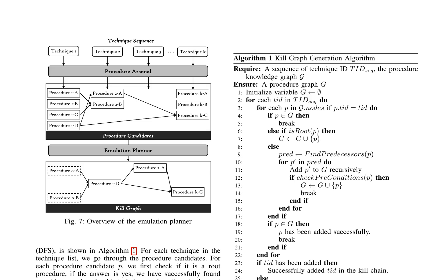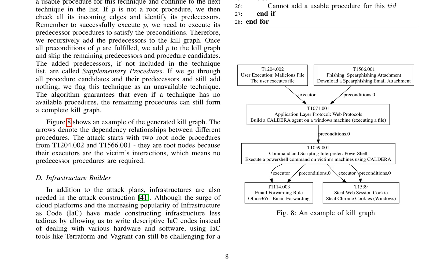AURORA is a multi-source attack technique emulation framework that generates attack plans based on CTI reports. It consists of several components including the CTI report analyzer, emulation planner, infrastructure builder, and attack executor. The system's graph searching algorithm is based on depth-first search (DFS) and ensures that all preconditions are fulfilled. The generated kill graph shows the dependency relationships between different procedures, with arrows denoting the dependencies. The system's limitations include the omission of critical steps in CTI reports, the unavailability of certain procedures in the attack arsenal, and the challenges of implementing social engineering attacks in an emulation environment.